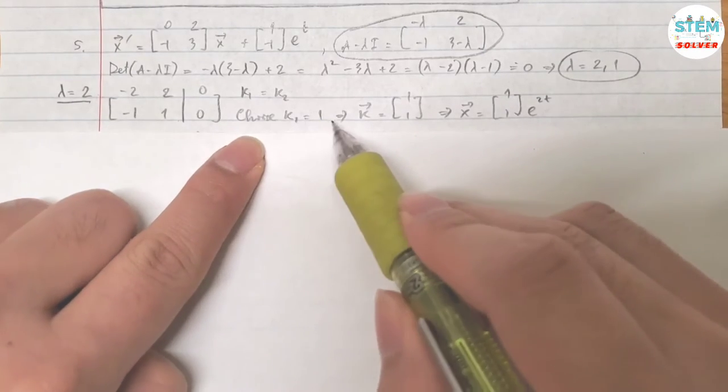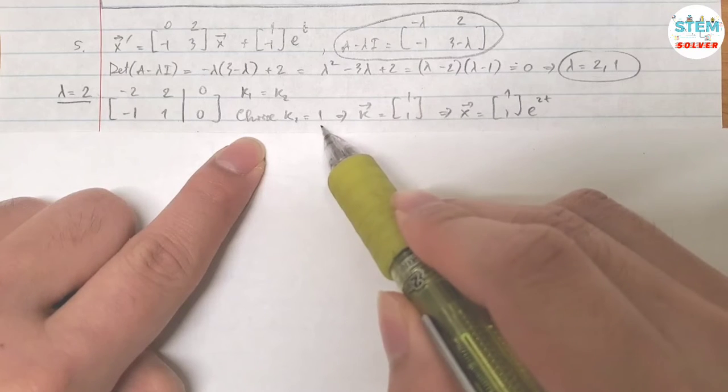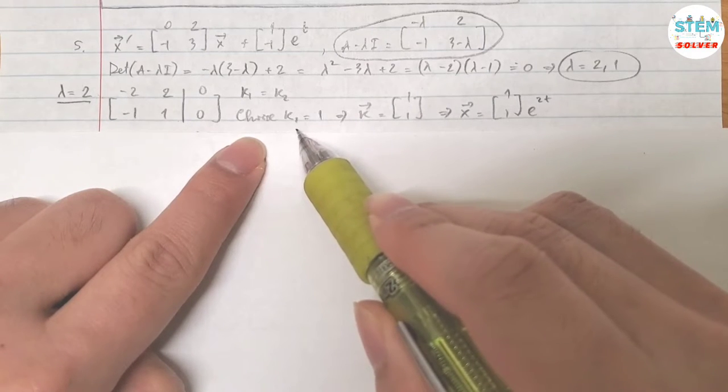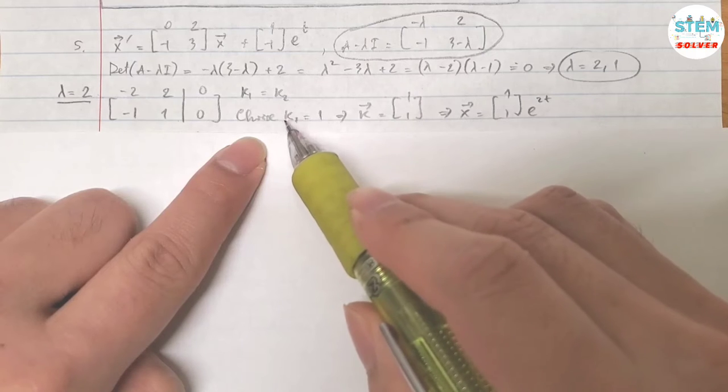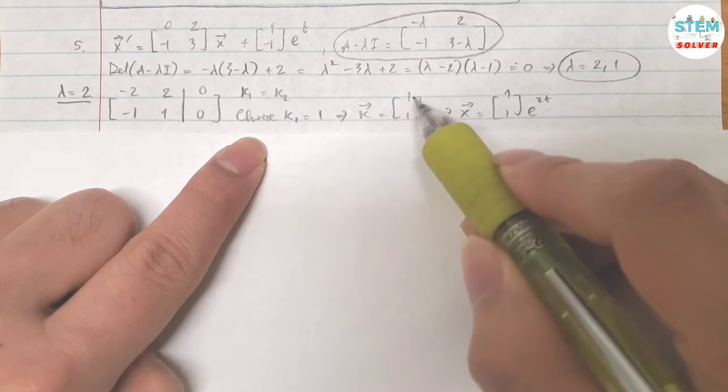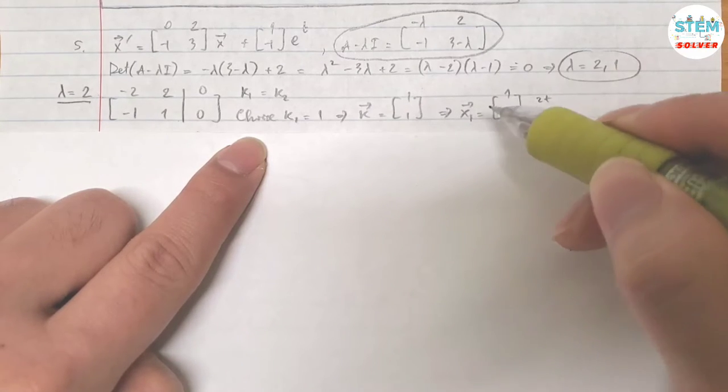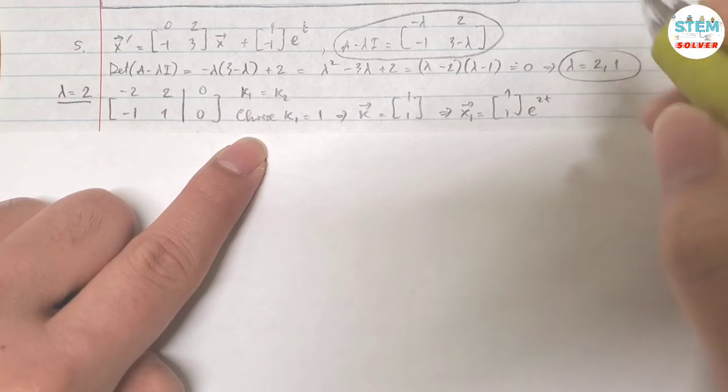Choose k1 equals 1, then k2 equals 1. Then vector k is [1, 1], and vector x1 is [1, 1]e^(2t).